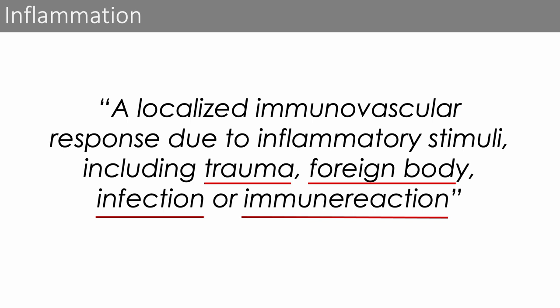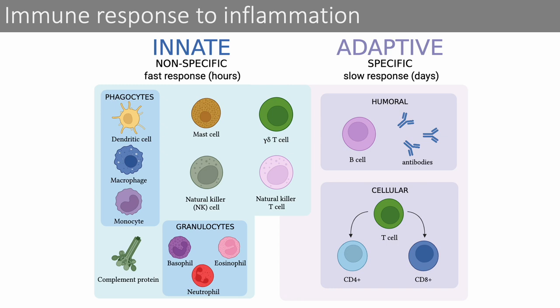Going back to the definition, inflammation is a localized immunovascular response to either one or a combination of those four causes. The immunovascular response contains both the immune and vascular system. Immunity is divided into the innate and adaptive immunity. The innate is a non-specific immune response, meaning it responds to any kind of inflammatory stimuli and is very fast, usually responding within minutes to hours. The innate immune response includes phagocytes, granulocytes, mast cells, gamma delta T cells, NK and NK T cells, as well as proteins of the complement system.